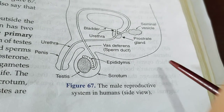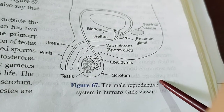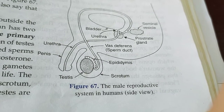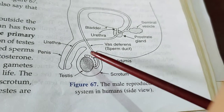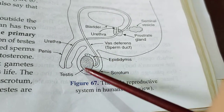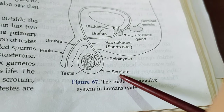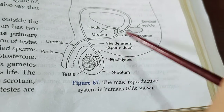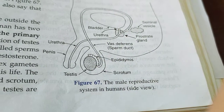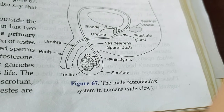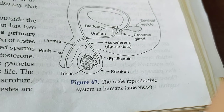Here in this picture you can see the side view of the male reproductive system in the human body. The male reproductive system consists of a pair of testes on both sides of the body. The testes remain inside a membranous sac-like structure called the scrotum, which remains outside the body cavity in a hanging condition, outside the abdominal cavity.